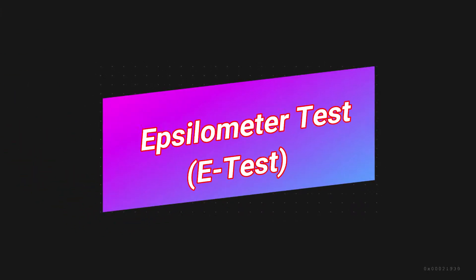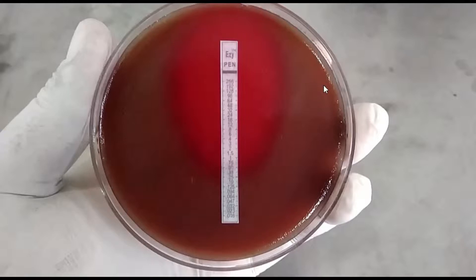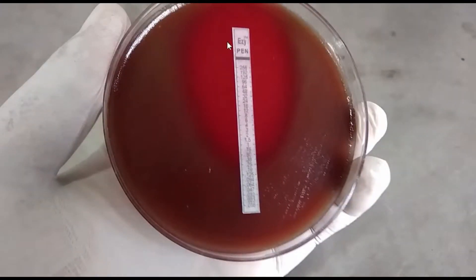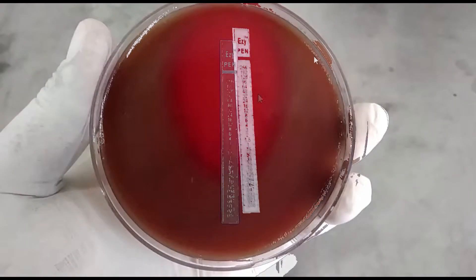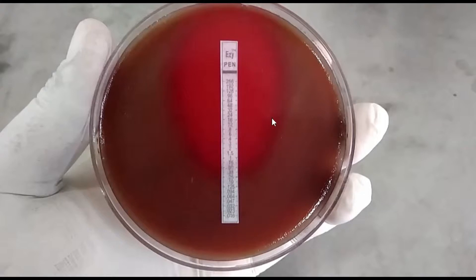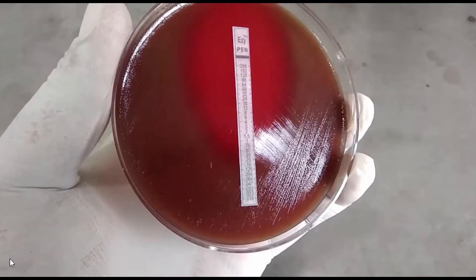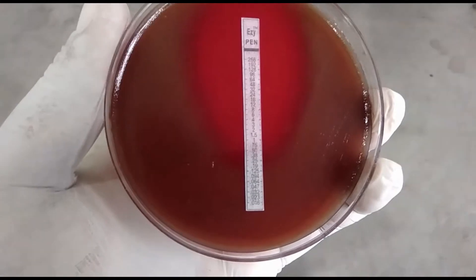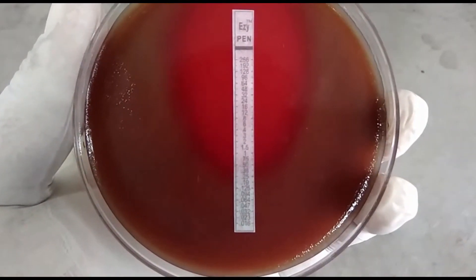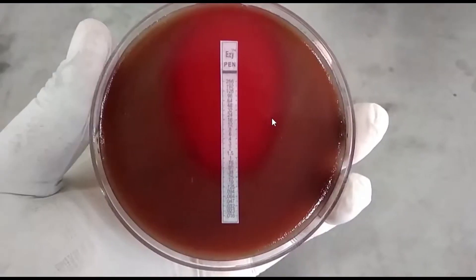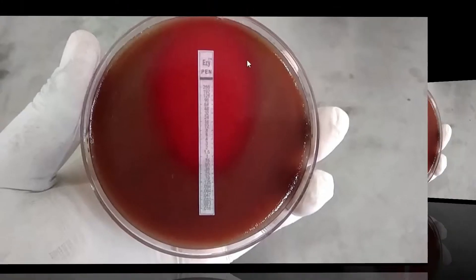Let's know about the Epsilometer test, or Etest, in brief. It is a recent modification of the other diffusion sensitivity test. It uses an absorbent strip with a known gradient of antibiotic concentration along its length. When the strip is placed on the agar plate inoculated with the test organism, the antibiotic diffuses into the medium. The minimum inhibitory concentration, or MIC, is recorded as the lowest concentration of the gradient which inhibits the growth of the organism.